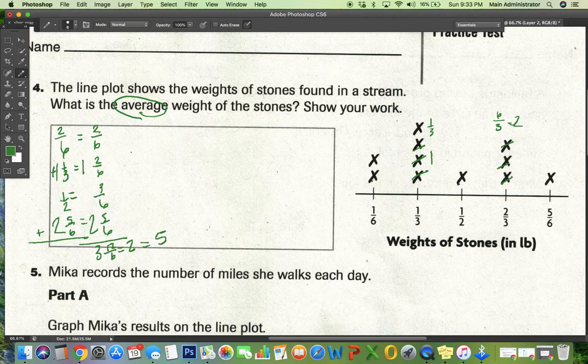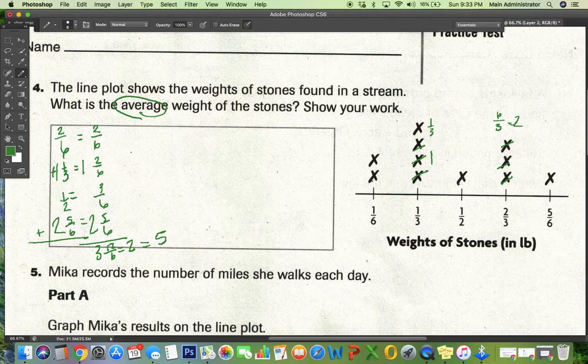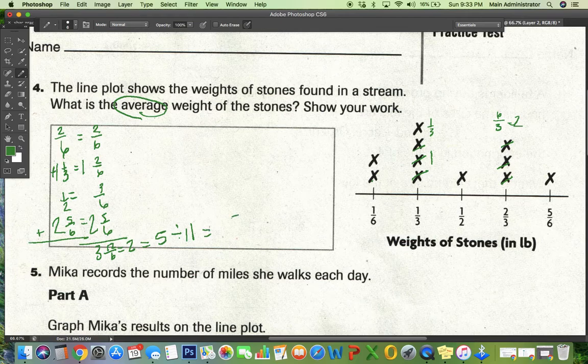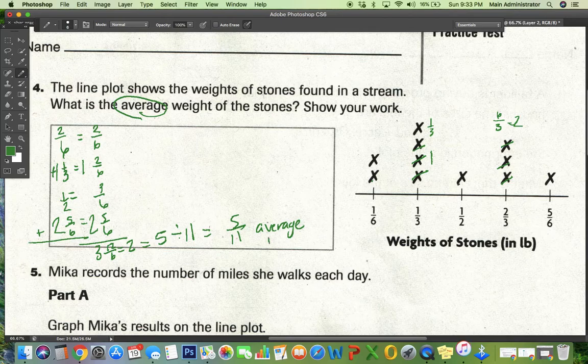But now I have to find the average, which is dividing by all the terms. There are 11 terms. So five divided by 11, which is the same as five over 11. And that's the average weight.